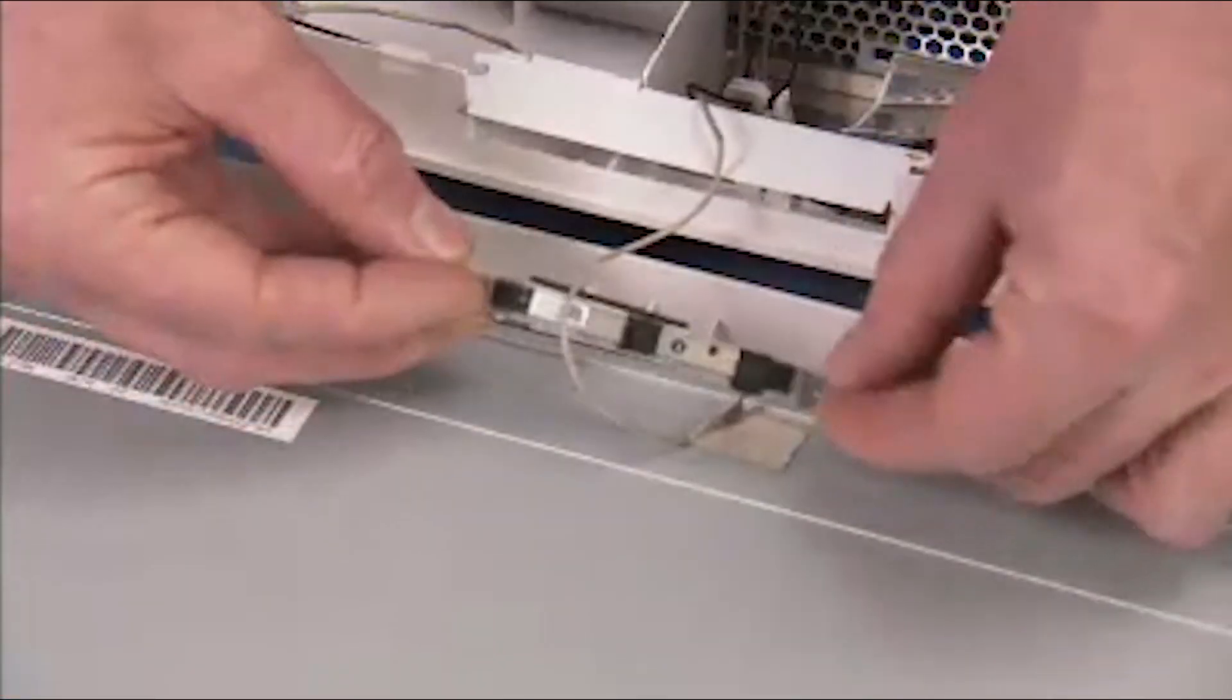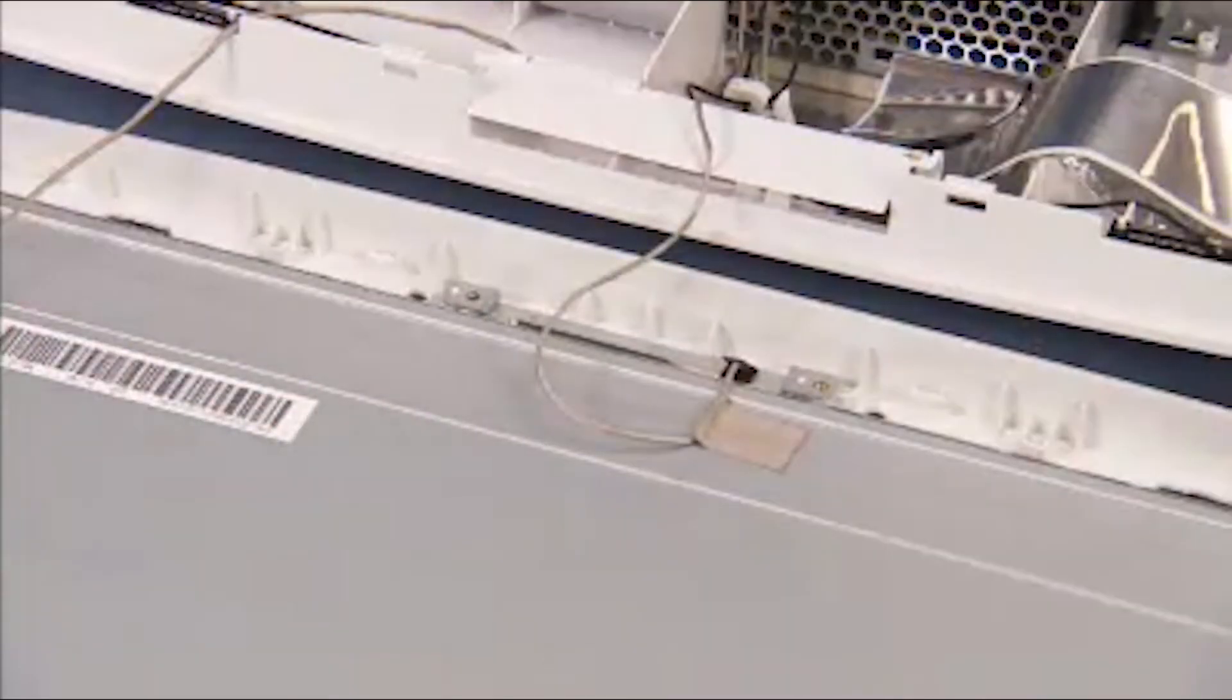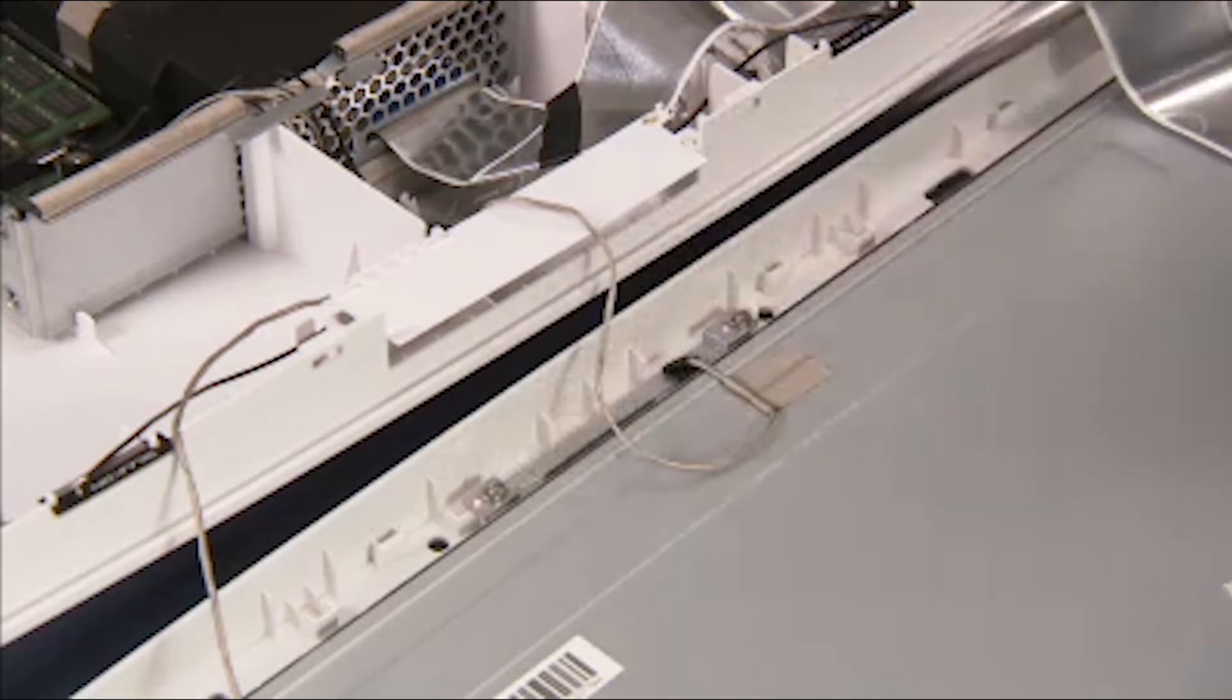Press the holes of the webcam bracket over their alignment pegs on the LCD panel assembly. Replace the two Phillips number 2 screws to secure the webcam bracket to the LCD panel assembly.